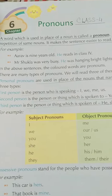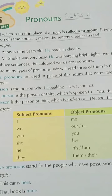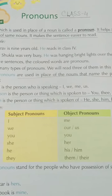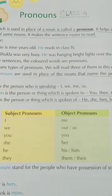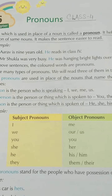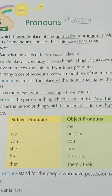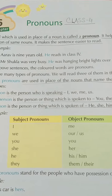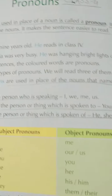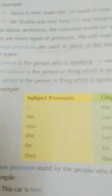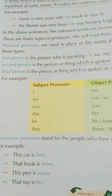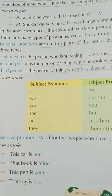For example, 'I' is used as a subject. When we use 'I' as a subject, then: I, me, we, you, you, she, her, he, his, him, they, them, and their. So now see the possessive pronouns — for the people who have possession of something, who have ownership of something.